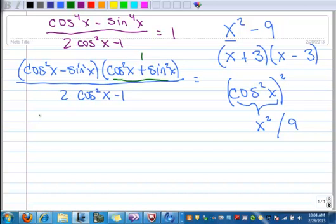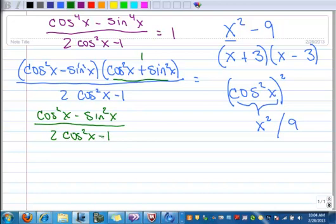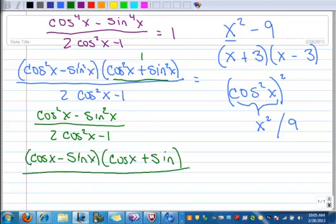And 1 times anything is itself. So now I'm left with cosine squared x minus sine squared x all over 2 cosine squared x minus 1. And the numerator, hey, that's the difference of two squares again. Let's factor that again. So now I've got cosine x minus sine and cosine x plus sine, and all over 2 cosine squared x minus 1.